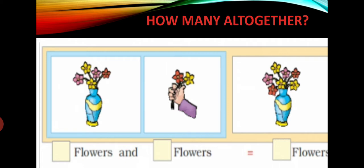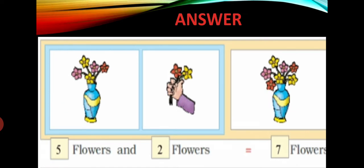5 plus 2 is equal to 7. So there are 5 flowers in the vase. When we put 2 more flowers in the vase, the total number of flowers in the vase is 7. So you can write down in this way: 5 flowers and 2 flowers that is equal to 7 flowers.